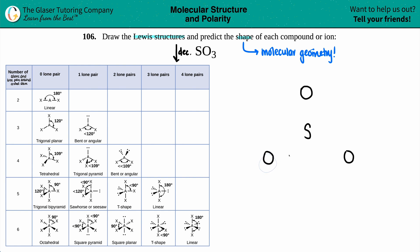Drawing Lewis structures always starts from the valence electrons. Since sulfur and oxygen are both in group 6A or 16, six is the lucky number. Sulfur has six valence electrons and each oxygen also has six — so one, two, three, four, five, six for each of them.